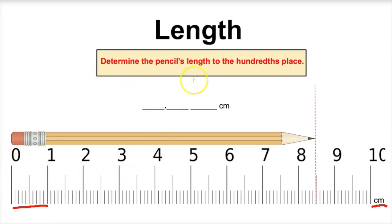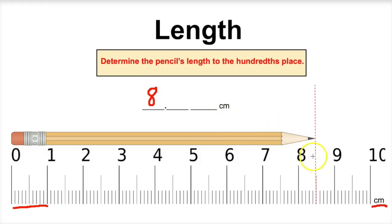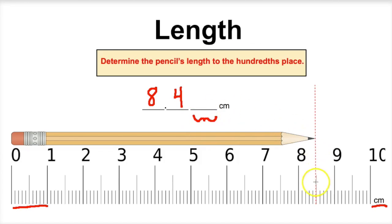So if we want to determine the pencil's length to the hundredths place, let's take a look. It looks like we know for certain that this pencil is at least 8 centimeters. We know with 100% certainty that it is 8 centimeters in length. And if we take a look, it's 8.1, 8.2, 8.3, 8.4. We know with 100% certainty that this pencil's length is 8.4 centimeters. However, what we can now do is estimate the hundredths place right here.